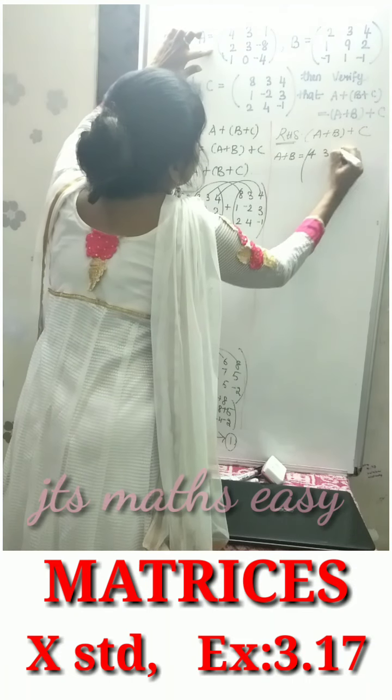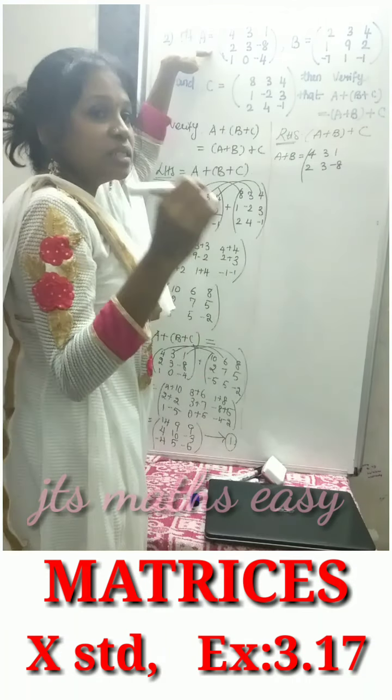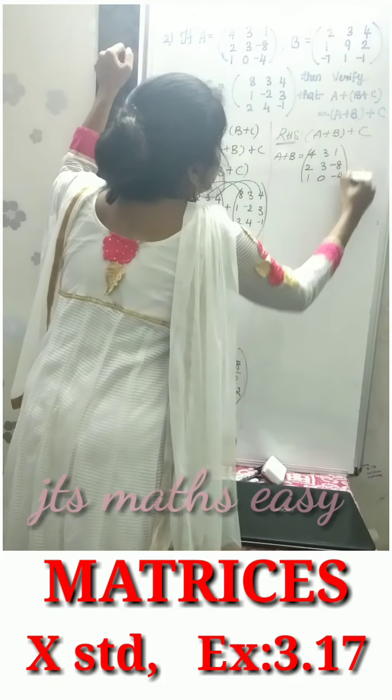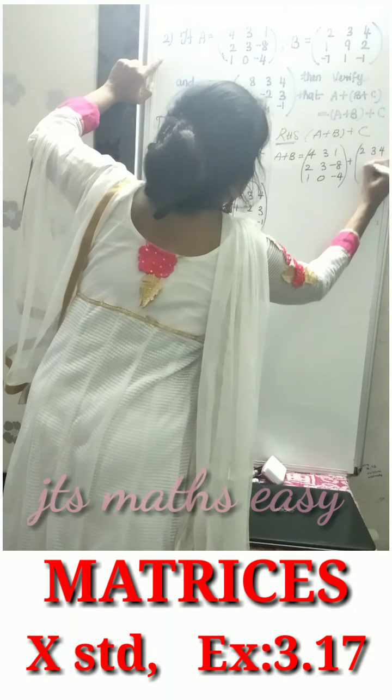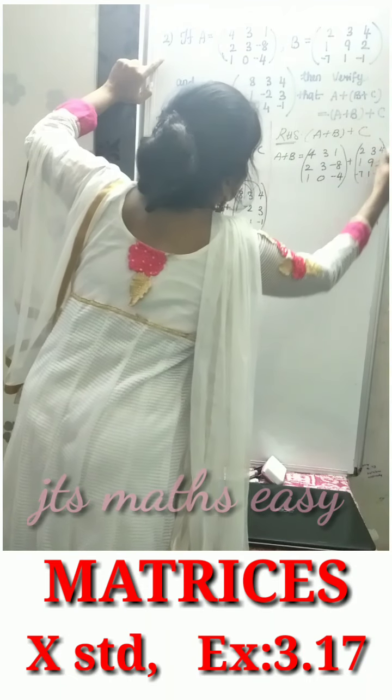A plus B equals: take matrix A which is 4, 3, 1, 2, 3, minus 8, 1, 0, minus 4. Then add matrix B which is 2, 3, 4, 1, 9, 2, minus 7, 1, minus 1.